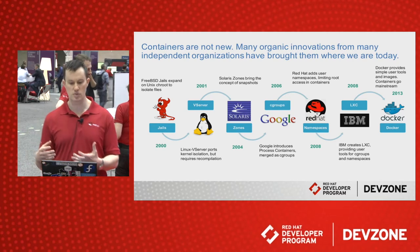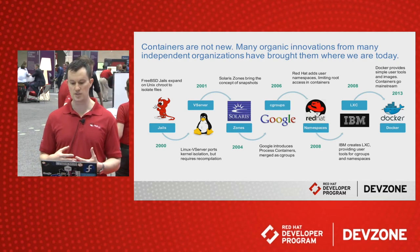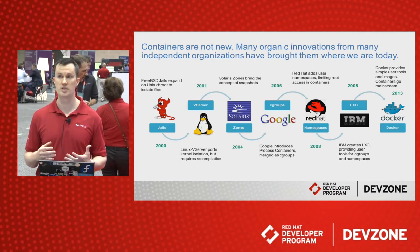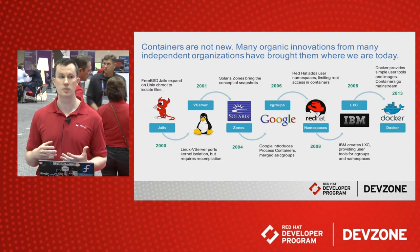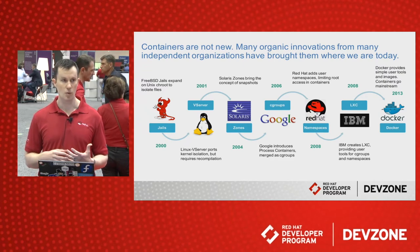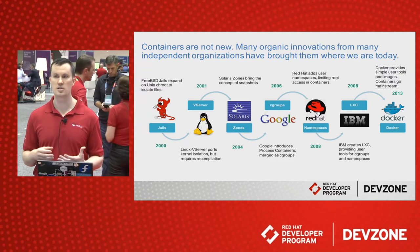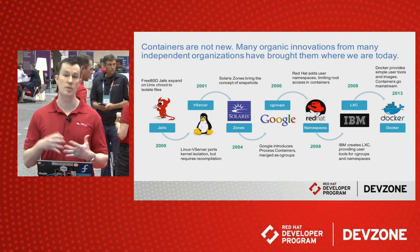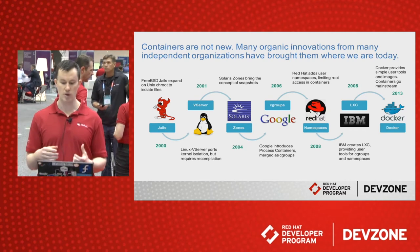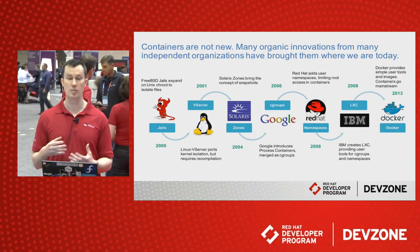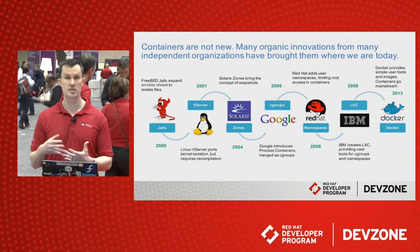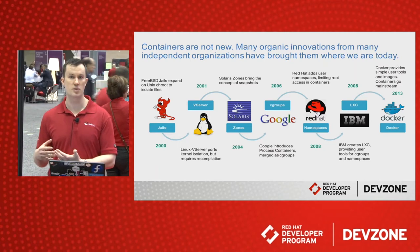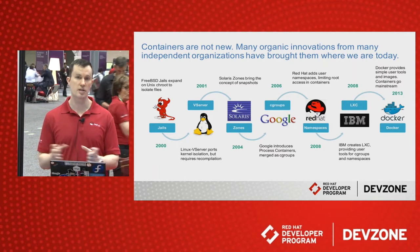BSD introduced a lot of concepts around isolation of namespaces and PIDs. Solaris had Solaris Zones. CGroups is actually a technology most people don't realize came out of Google. Google realized they were trying to eke out all the performance they could, because when you have a minor performance problem at scale, that becomes a very large problem. So CGroups was designed to isolate resource limits.